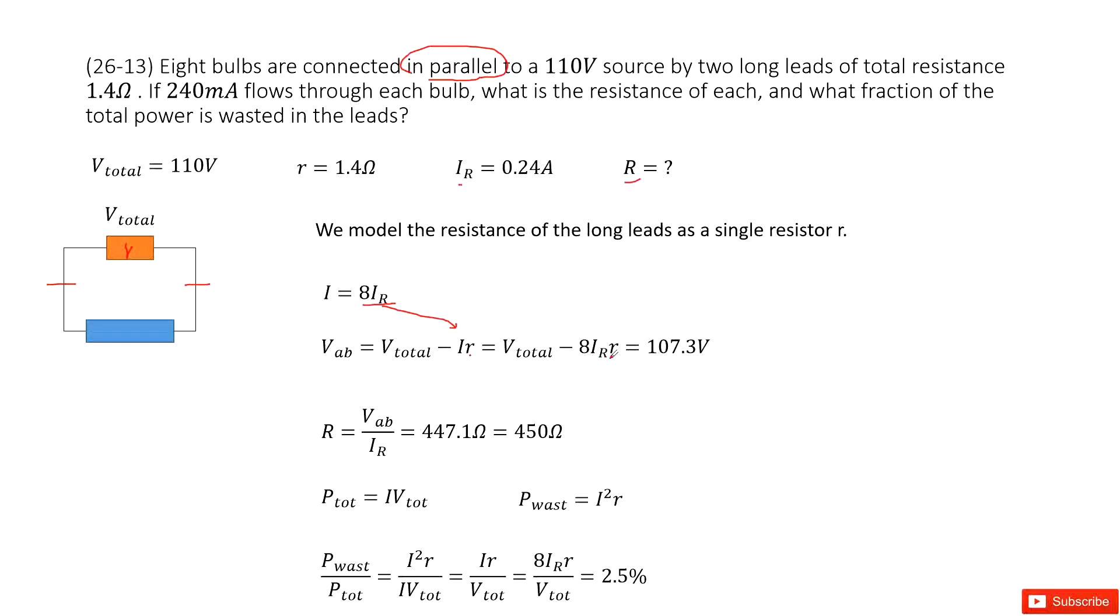We get a function that looks like this one. Input all the given quantities. We get the terminal voltage as 107.3 volts. Now, next step. Find the resistance for each light bulb. We can use the terminal voltage divided by the current for each light bulb and then it's 450 ohms.